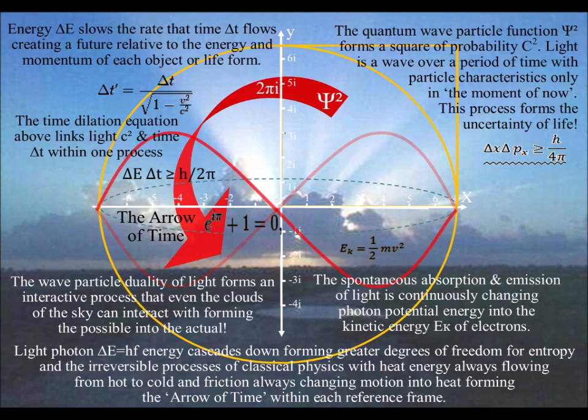Quantized energy cascades down from the sun, forming greater degrees of freedom for statistical entropy and the irreversible processes of classical physics, such as heat always flowing from hot to cold and friction always changing motion into heat, forming the arrow of time within each reference frame.